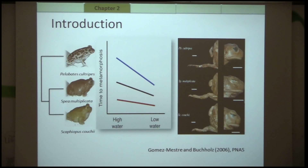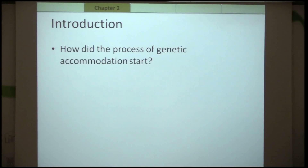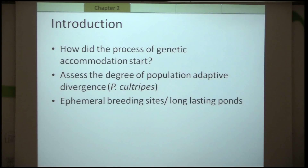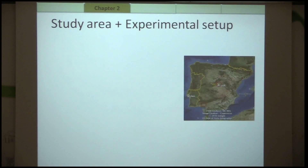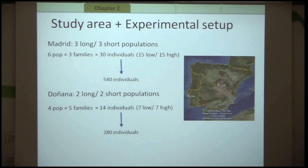All these species are at least to some degree genetically accommodated, and we are interested in assessing how the process of genetic accommodation started. To answer this, we assess the degree of population adaptive divergence in Pellobates cultripes, which retains most of its ancestral phenotypic plasticity. We look at populations originating from either ephemeral breeding sites or long-lasting ponds: three long-lasting and three short-lasting populations from Madrid, and two long-lasting and two short-lasting populations from the Doñana area.